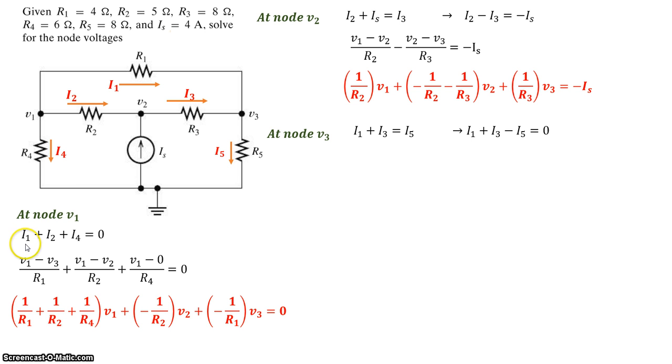Applying Ohm's law, we already saw I1 is V1 minus V3 divided by R1. We already saw I3 is V2 minus V3 divided by R3, and I5 is simply V3 minus 0 divided by R5. So let's write that down. Again, just like before, we'll collect the coefficients of V1, V2, V3, and put the equation in standard form.